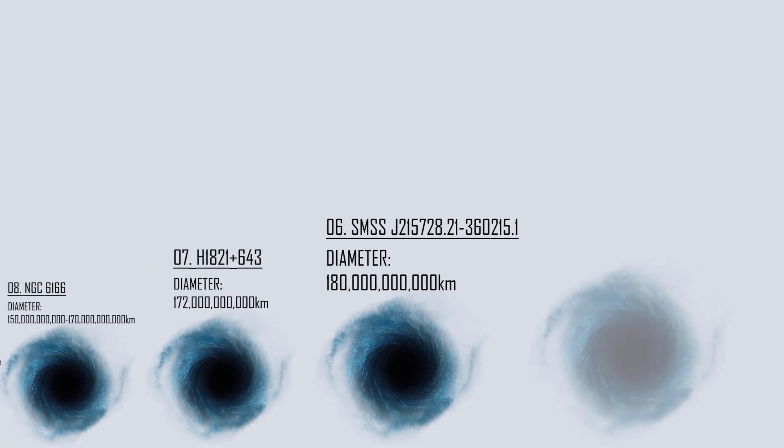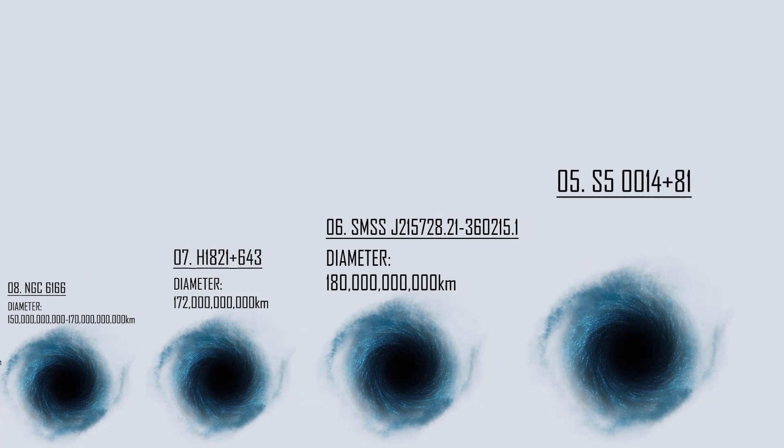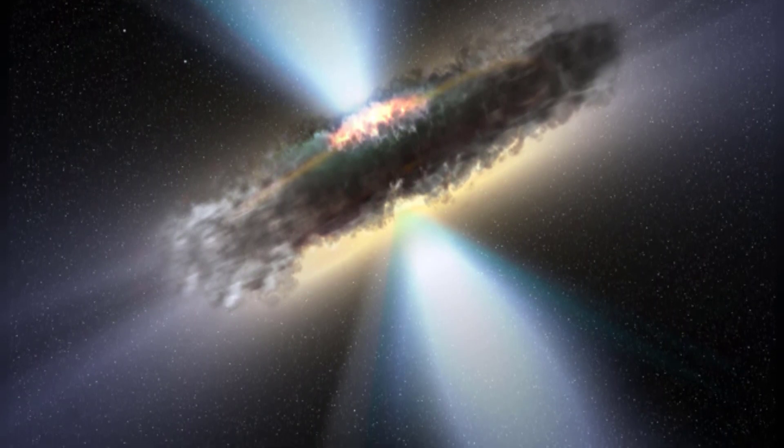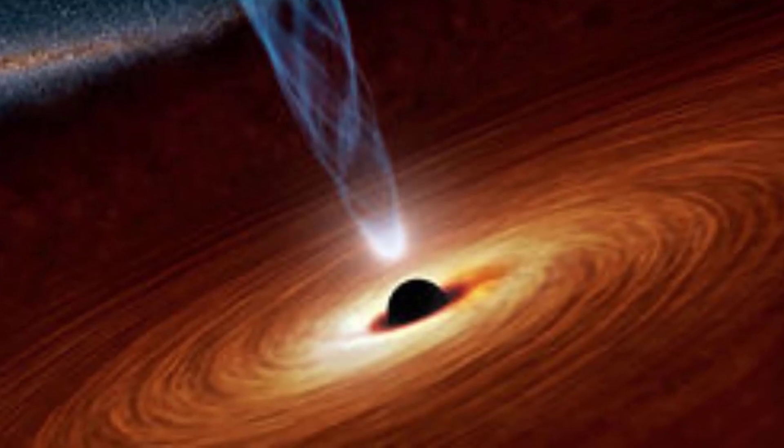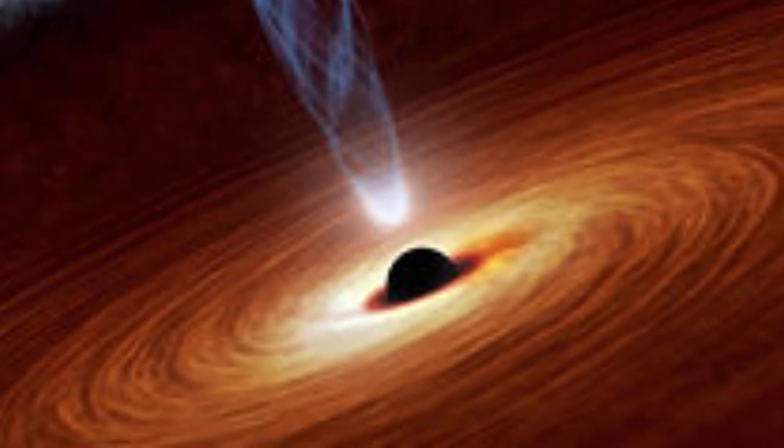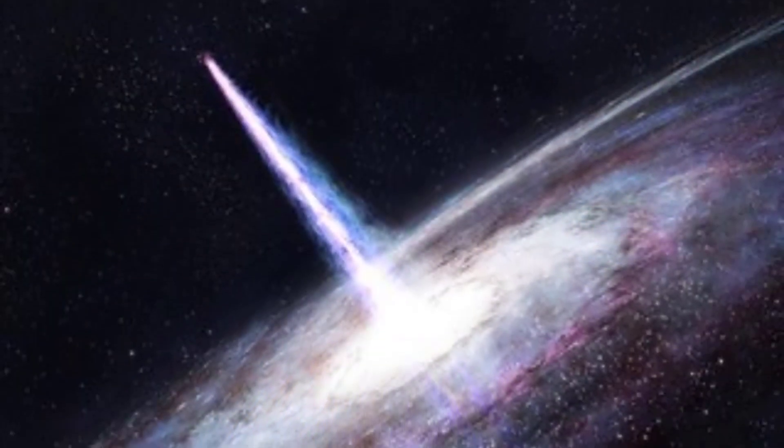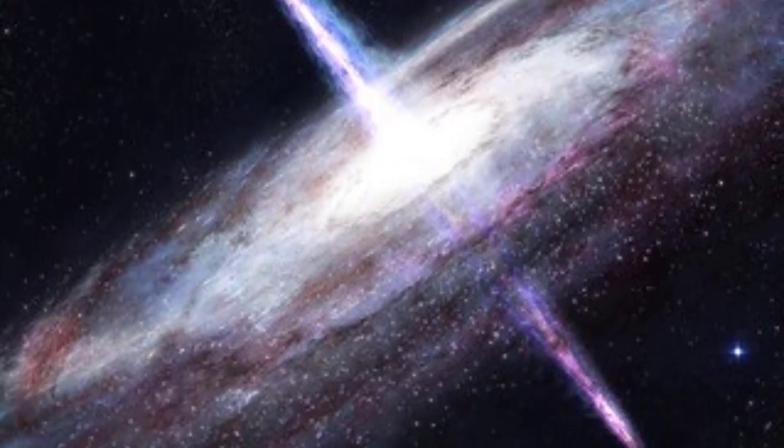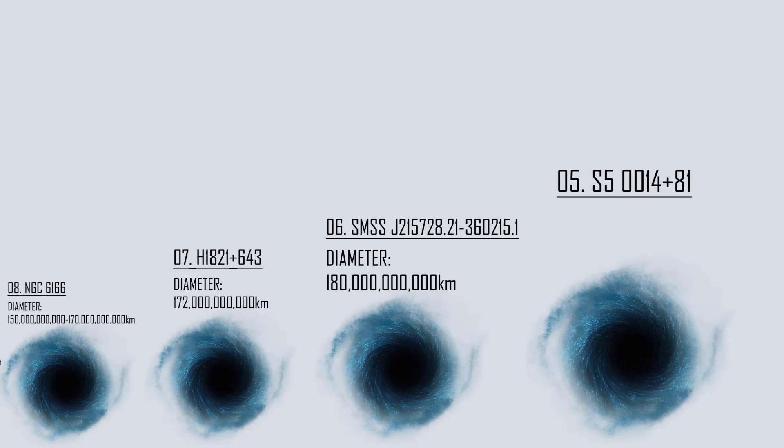Number 5: S5 0014+81. This S5 0014+81 is a distant, compact, hyperluminous, broad absorption line quasar, or a blazer. Located near the high declination region of the constellation Cepheus near the north equatorial pole, it contains an ultra-massive black hole with an estimated mass of around 40 billion solar masses, and a diameter that can be estimated to be around 200 billion kilometers, or 20 times the orbit of Pluto around the sun.